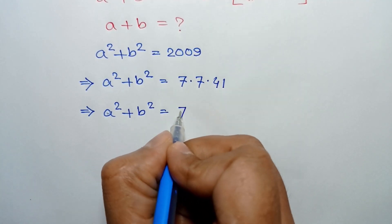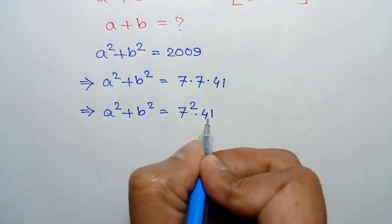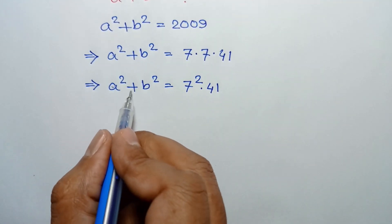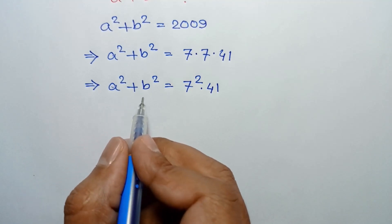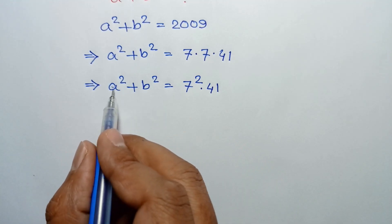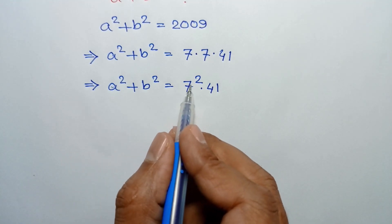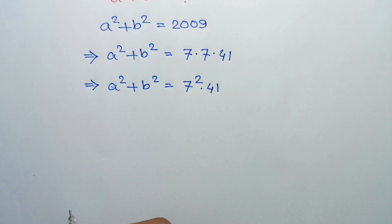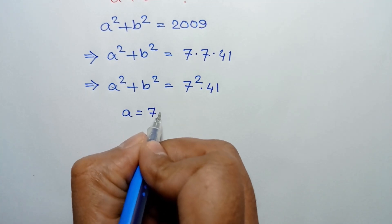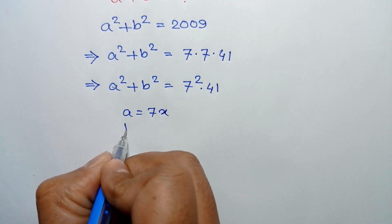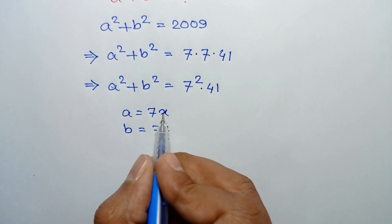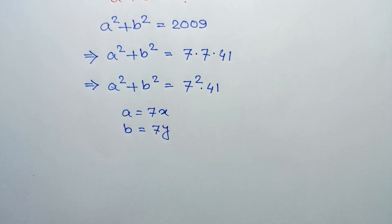So a squared plus b squared is equal to 7 squared times 41. Since the sum of two square numbers is a product involving 7 squared, both a and b are divisible by 7. Let's consider a equals 7x and b equals 7y, where x and y are both integers.